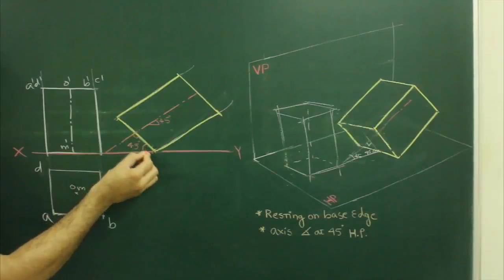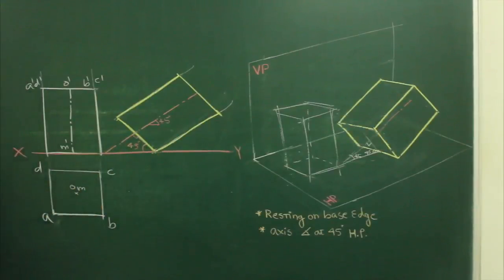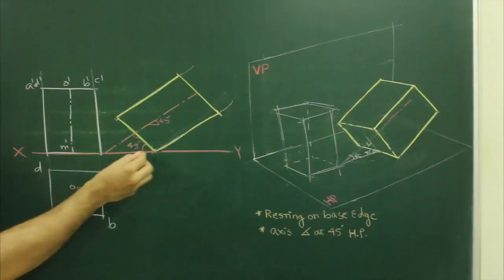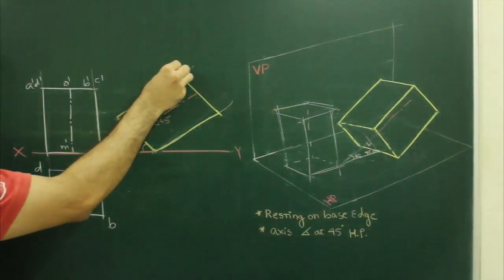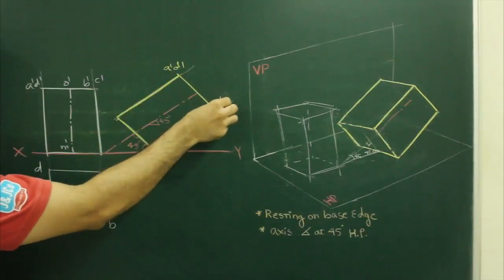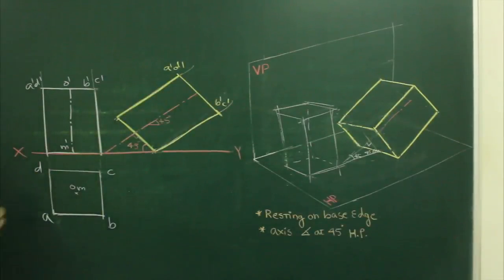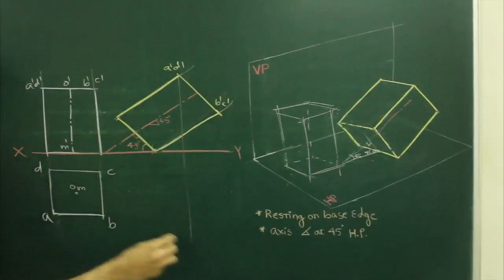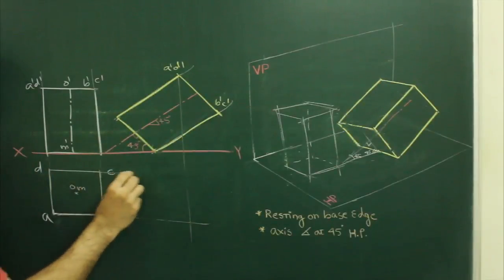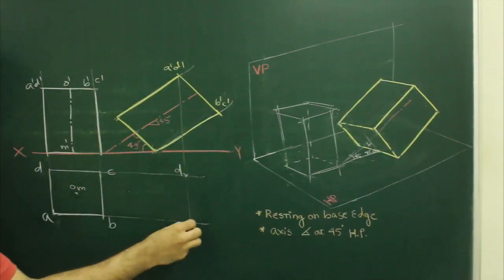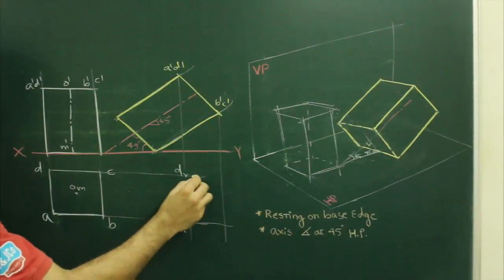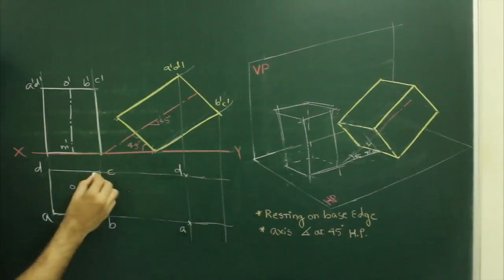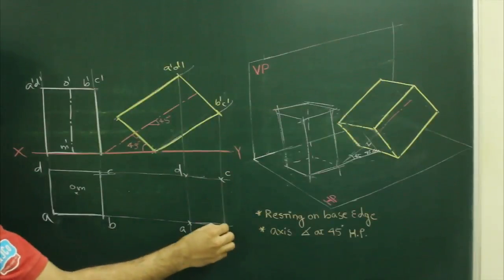For this construction, the base is resting on horizontal. Now we will draw projections: a dash, d dash, c dash. We project from a dash and d dash, and project from a and b to get b. Similarly from b dash and c dash, extending from b and c, we get b squared.